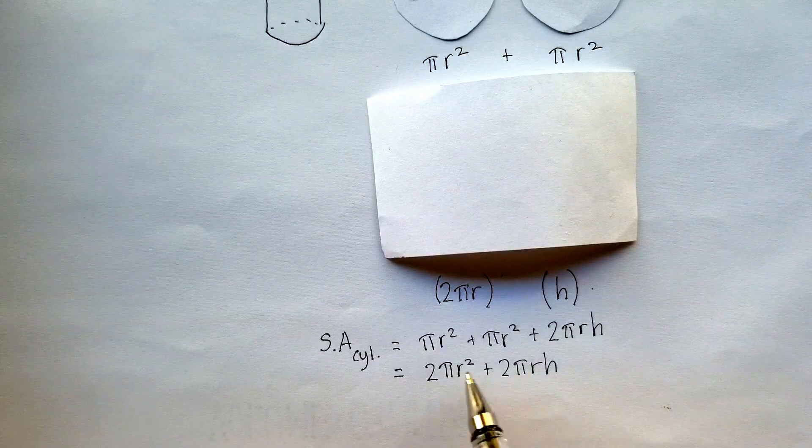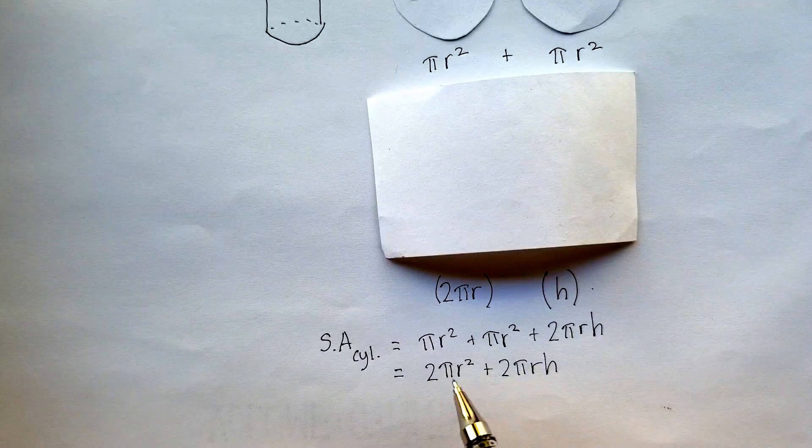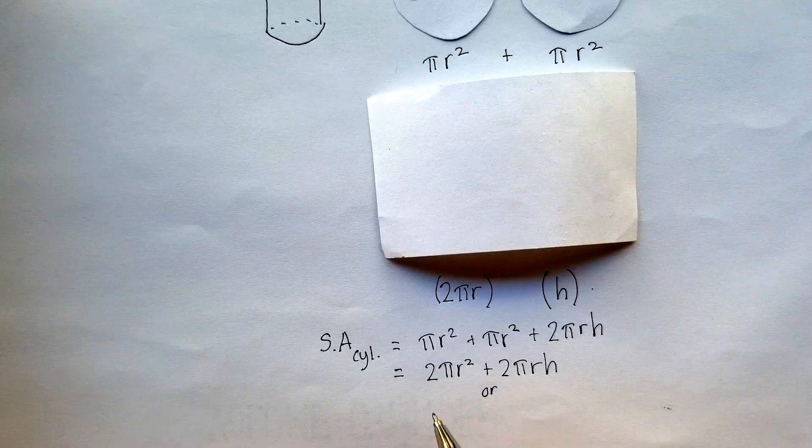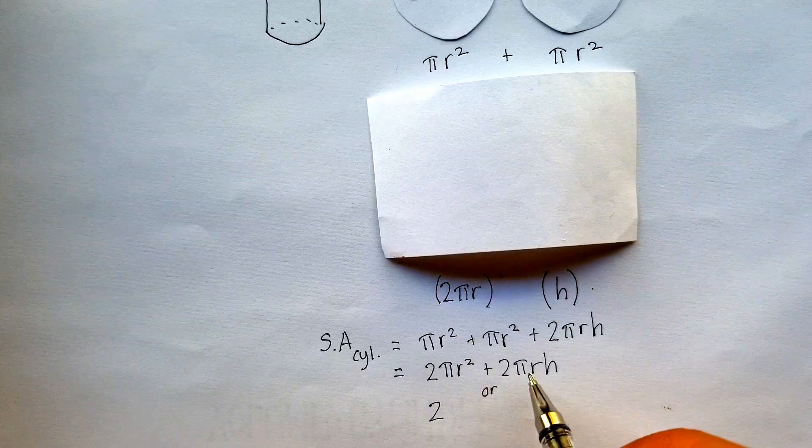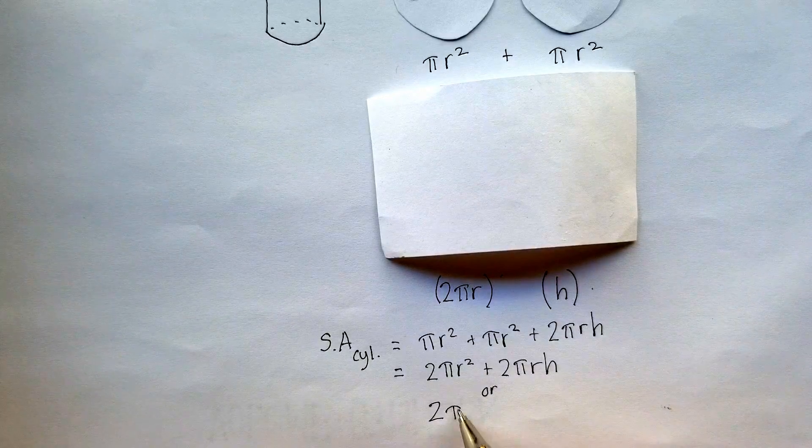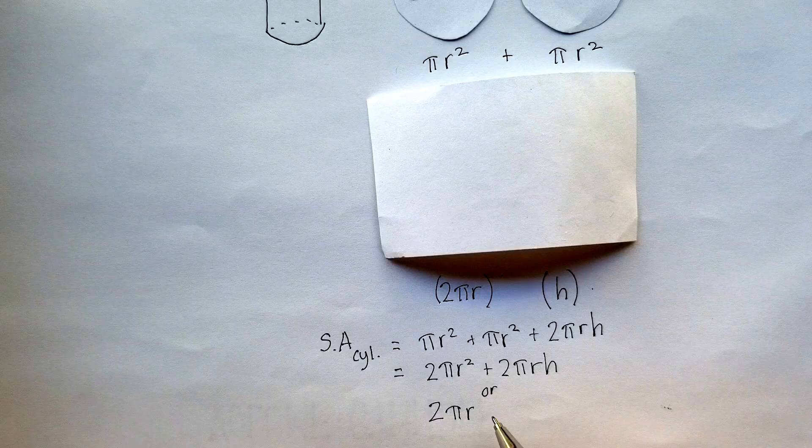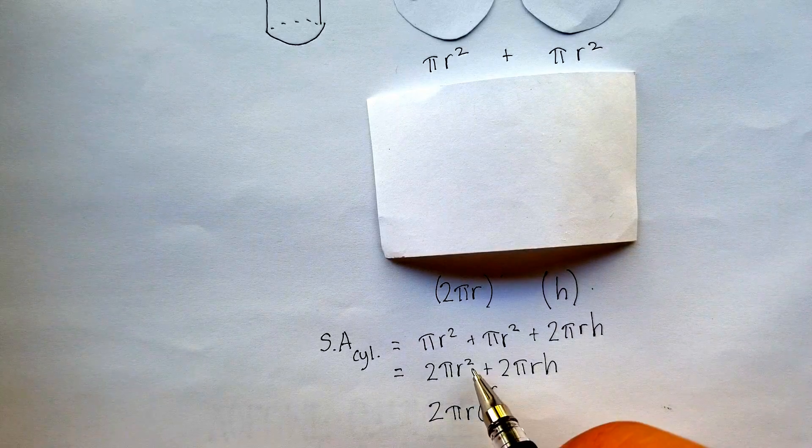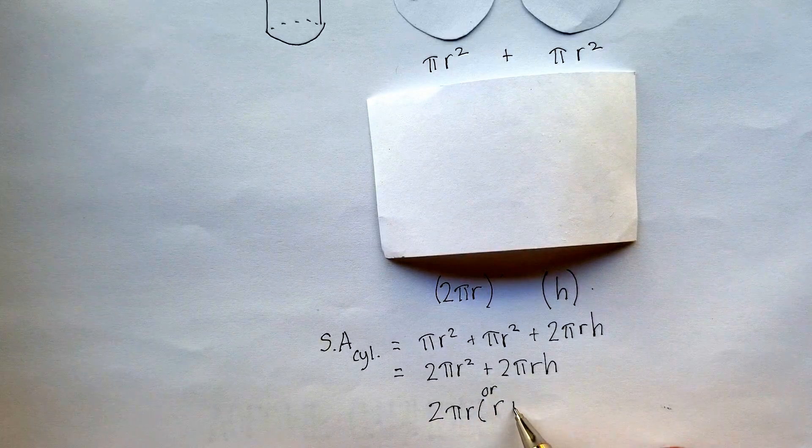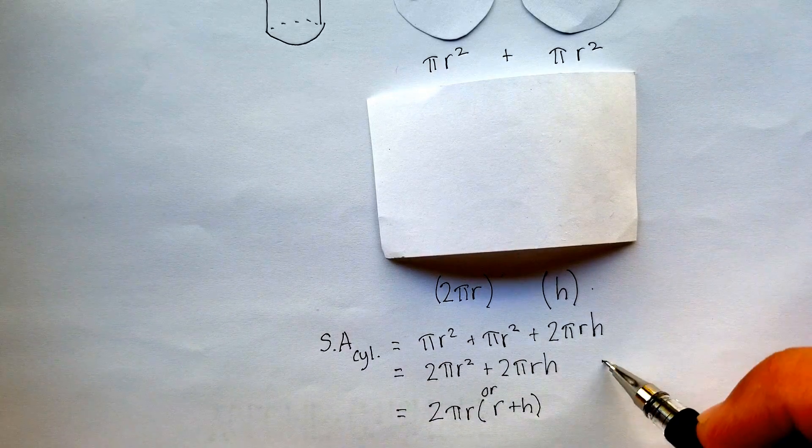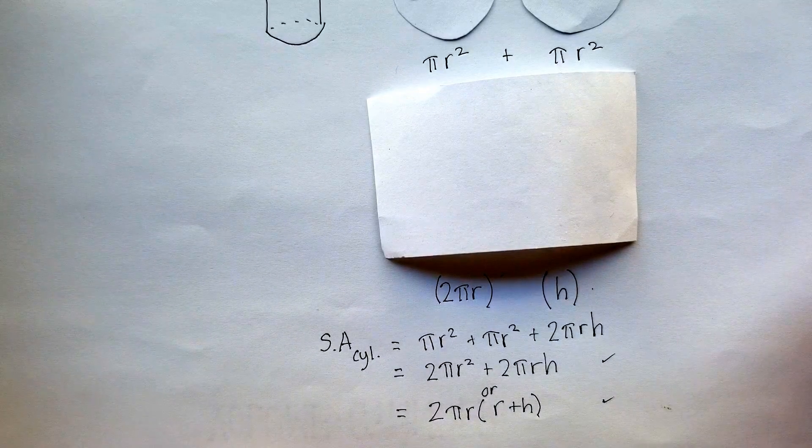The other thing you can do is you can factor out the common factors out of both of these. You can take out 2 because that's common to both sides. Pi is common to both sides. r is common to both sides. And you're left with r plus h. Either one of these two formulas is perfect for any cylinder.